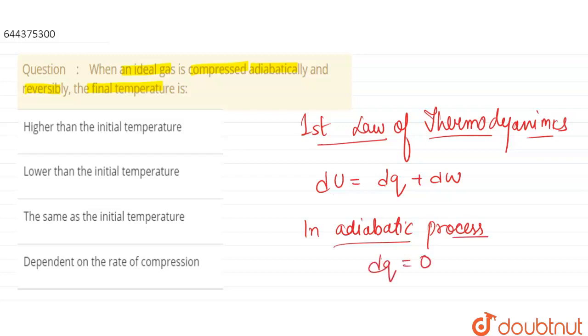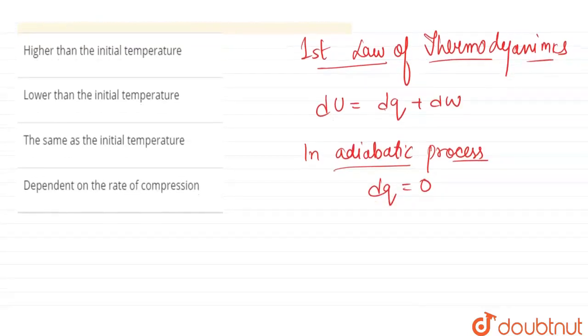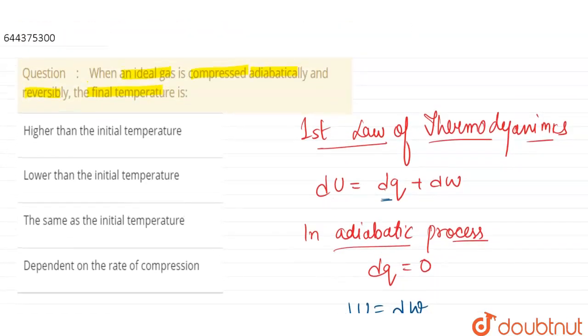That means from here can we say that dU is equals to dW, because this term became zero. So dU is equals to dW, right?